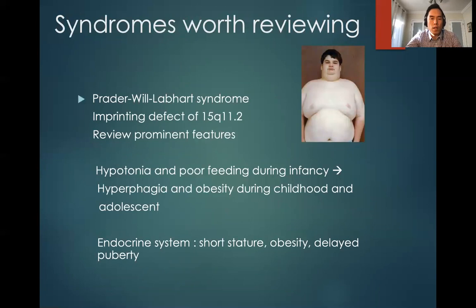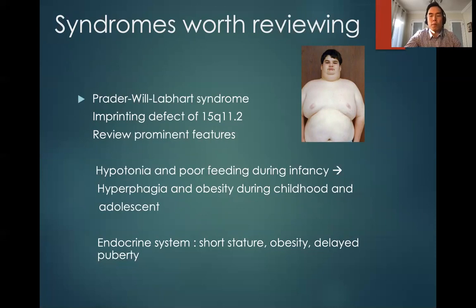Prader-Willi syndrome is caused by an imprinting defect at chromosome 15q. Common features include hypotonia and very poor feeding during infancy, which later develops into hyperphagia — the opposite — leading to obesity during childhood and adolescence, along with intellectual disability. For the endocrine system, short stature, obesity, and delayed puberty are the main features.